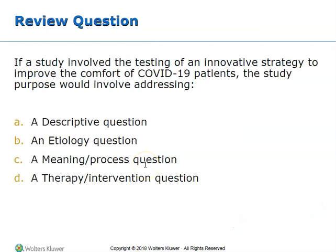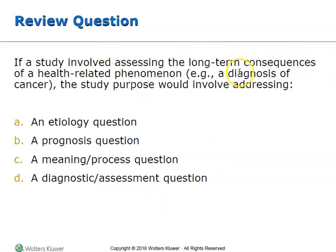Here's a review question. If you were looking at a study that was testing an innovative strategy to improve patients' comfort for those who had COVID-19, which type of purpose would that study involve? That would be a therapy and intervention question, because we're looking at an intervention to see if it's effective at comforting those who have COVID-19. A similar but different question: if you're looking at a study that examines the long-term consequences of a diagnosis — say stage four renal cancer or breast cancer with metastasis to the liver — what kind of purpose are you addressing? That's a prognosis question. Those are just a couple of examples to show how varied research is.